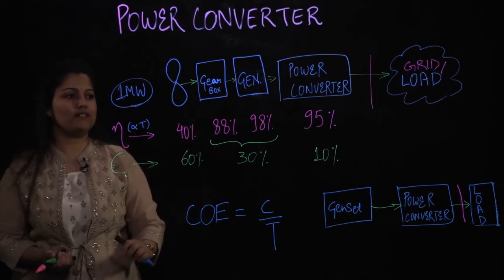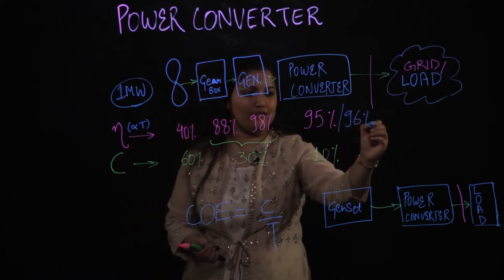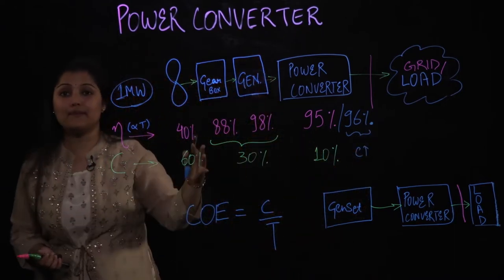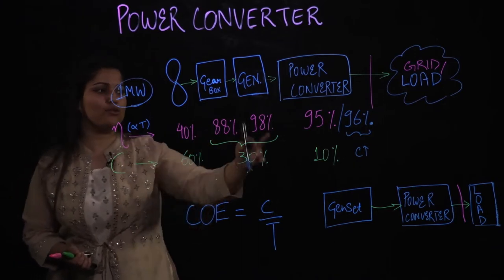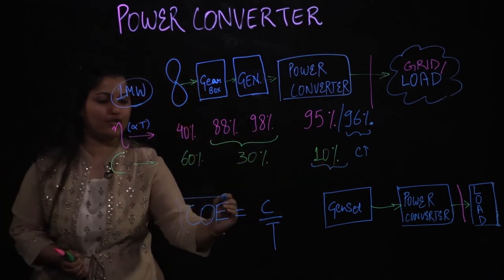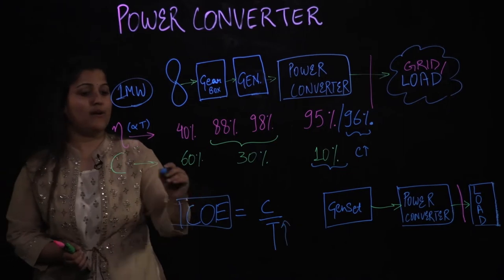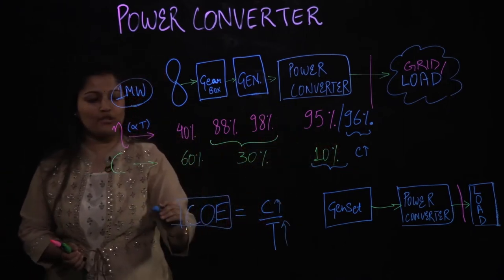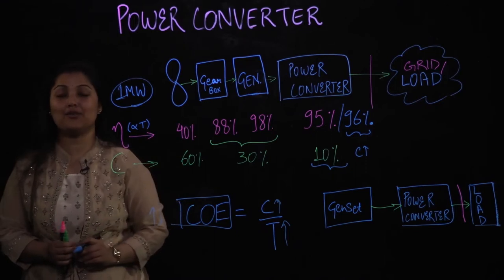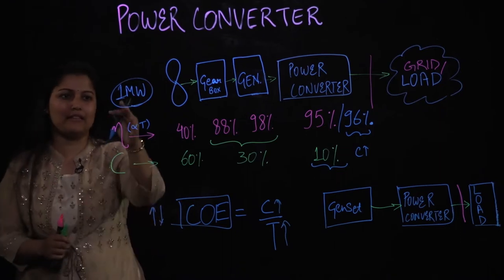Now if you want to understand which power converter to use, let's say in the market you have two options: 95% or 96% efficiency, and the higher efficiency one comes at a higher cost. So which converter do you choose — the 95% one or the 96% one? How do you make sure the cost of energy is optimized? When efficiency is higher, your electrical energy output is higher, but your cost is also higher. So would the cost of energy increase or decrease? It totally depends on what converter you are choosing. This is an optimization question you can ask yourselves by considering off-the-shelf power converters available for wind systems in the range of 1 megawatt.